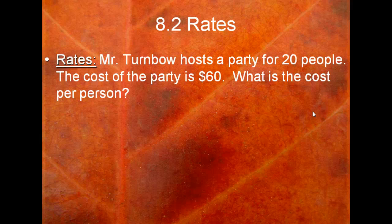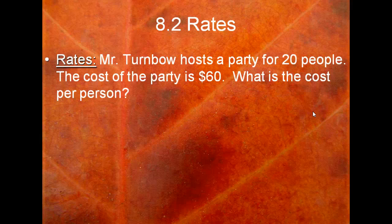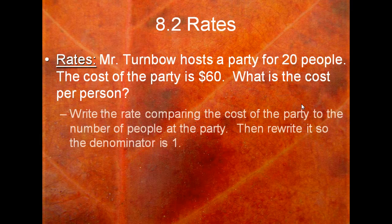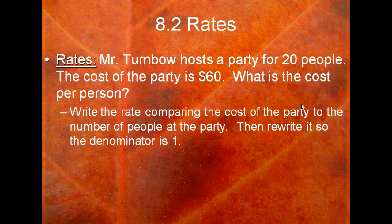So we're going to say what is the cost of the party per person. So if we were to average it out, what would be the cost for each person. This could be useful if let's say he decides to add a couple more people and he wants to change the cost. He knows how much to charge maybe per person. If maybe a couple people can't come, then he knows how much to subtract off the total price. So what we're gonna do is we're going to write the rate. We're going to compare the cost of the party to the number of people at the party, and then we're going to rewrite it so that the denominator is one. That gives us the unit rate.